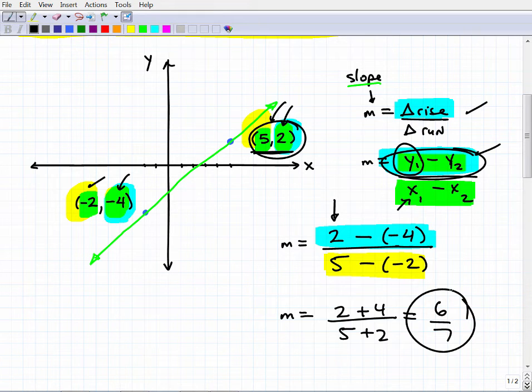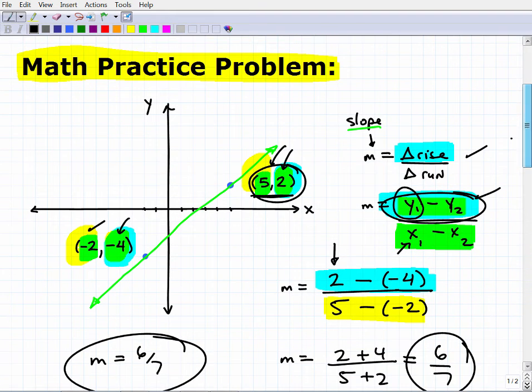So that is the slope. The slope of the line that passes through these two points here is 6 over 7. And I can go into a whole other discussion on positive slope, negative slope, and more about the definition of the slope. But this is very, very important.